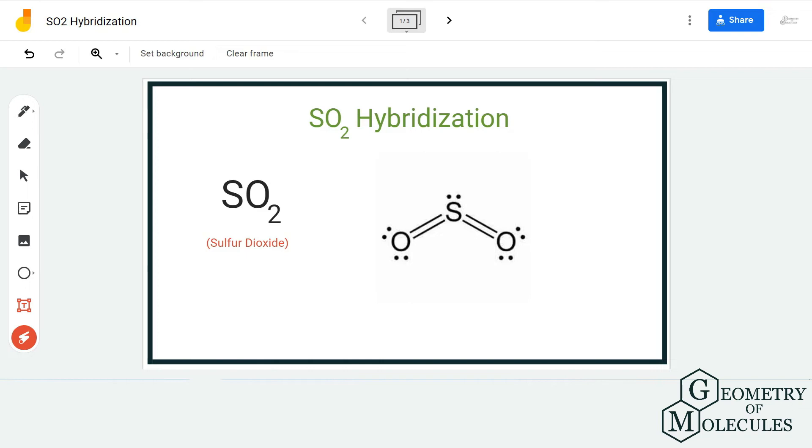Hi guys, welcome back to our channel. In today's video we are going to help you find out the hybridization for SO2 molecule. It's the chemical formula for sulfur dioxide, and to find out its hybridization we are first going to look at its Lewis structure.